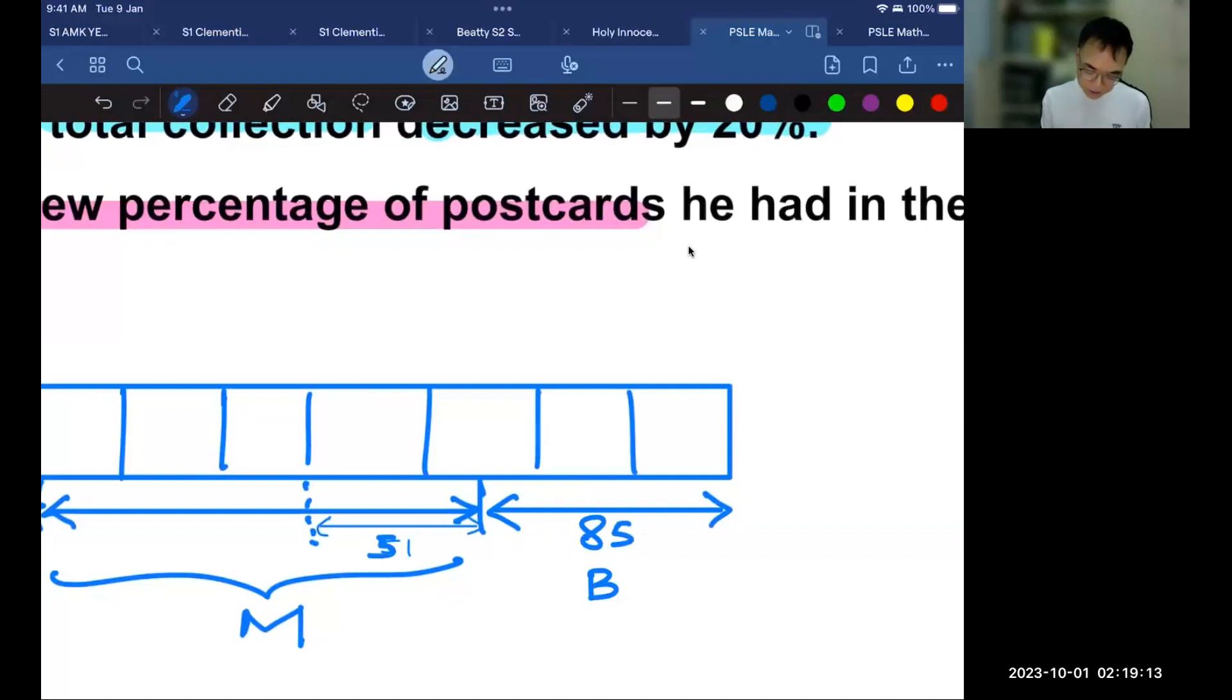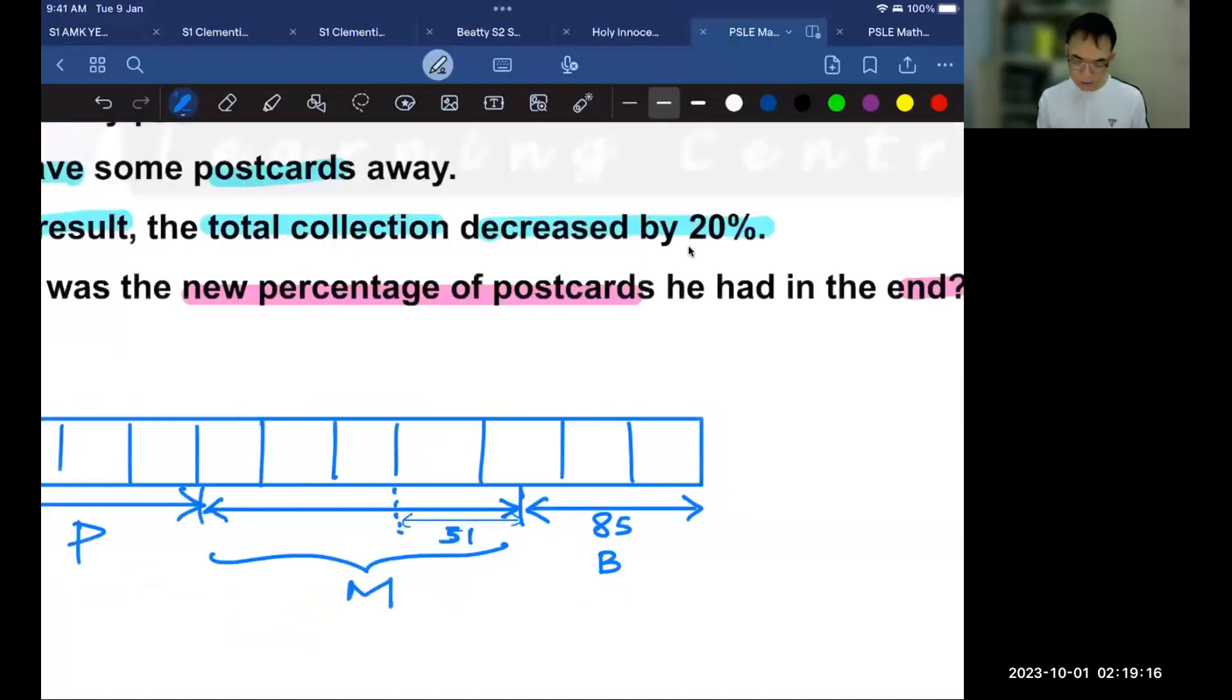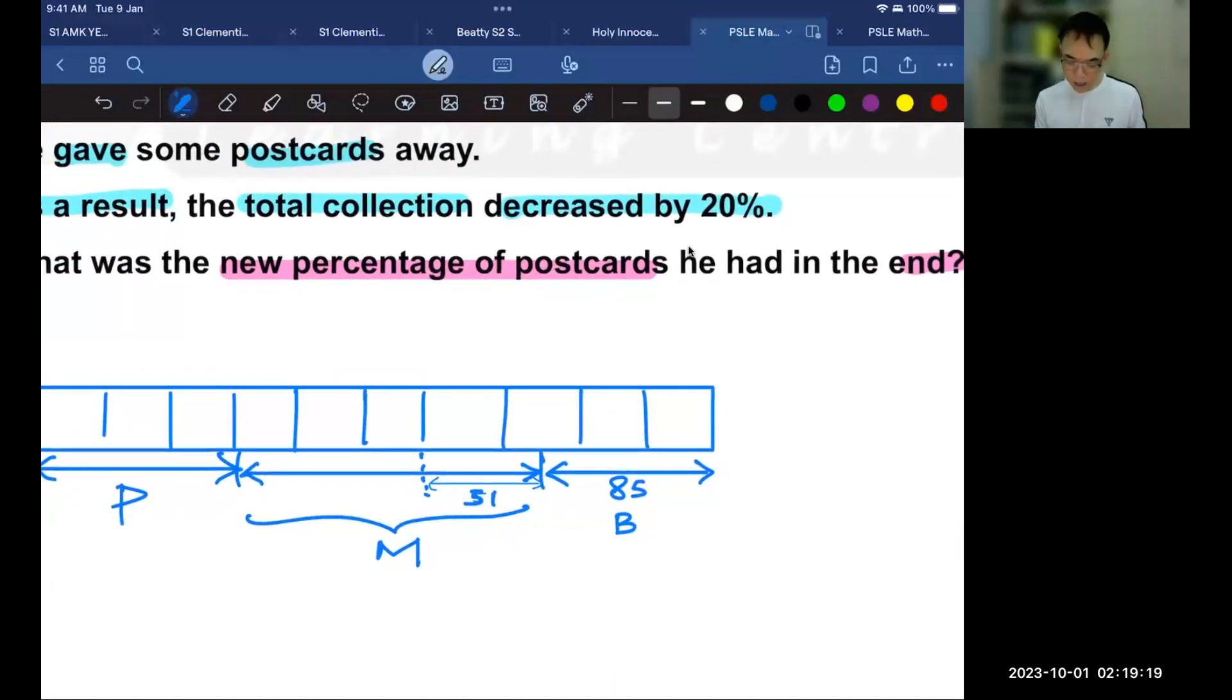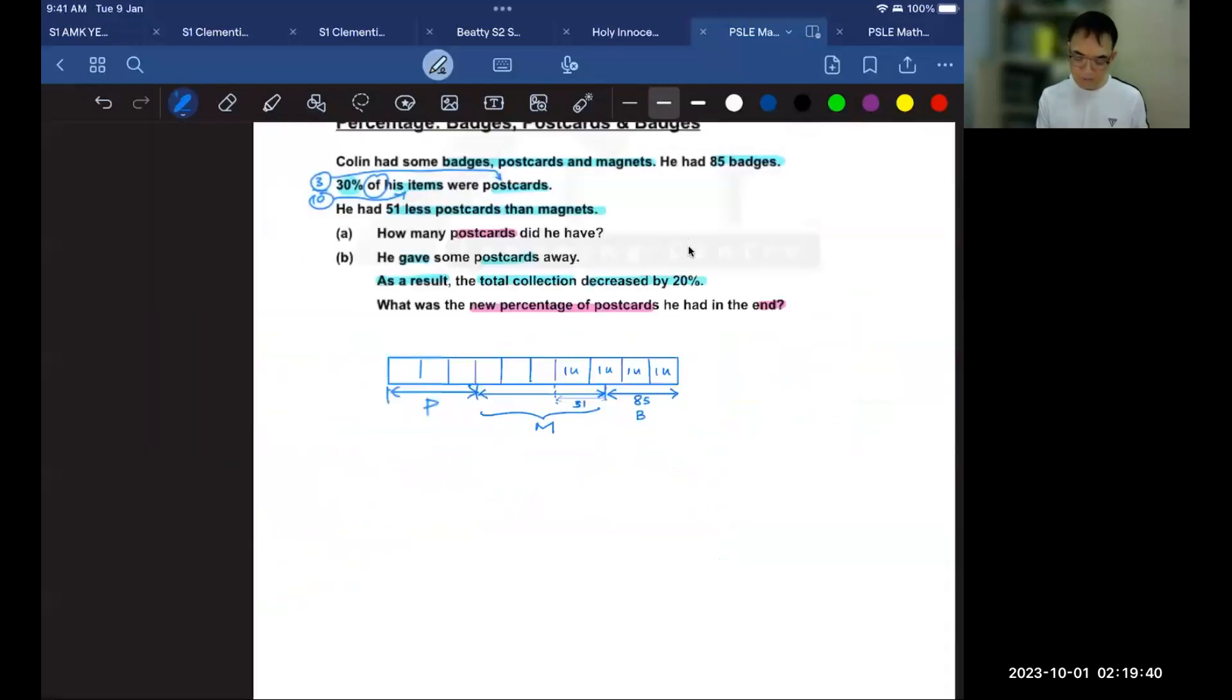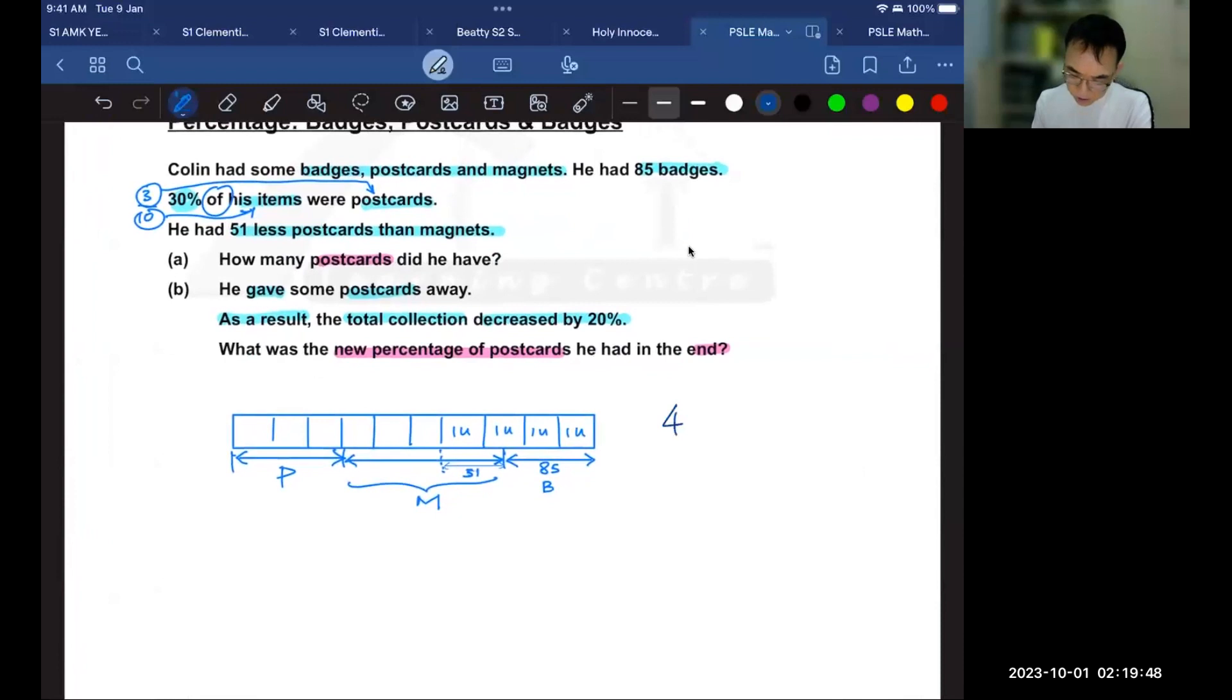And I know that I have 51 over here. Then all I have to do right now is to add 51 to 85. And that will give me 2, 3, 4, 4 units. And I'm going to label that as well. So each of this will represent 1 unit. And now I know that 4 units is 51 plus 85. So 4 units is 51 plus 85. And this will give me 136. Since 4 units is 136, then 1 unit would be 136 divided by 4 to give me 34.